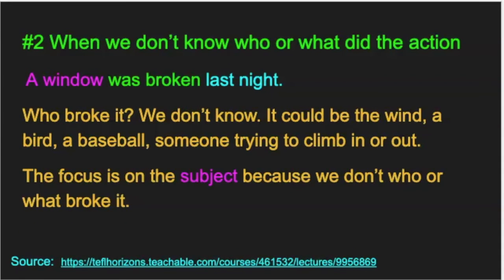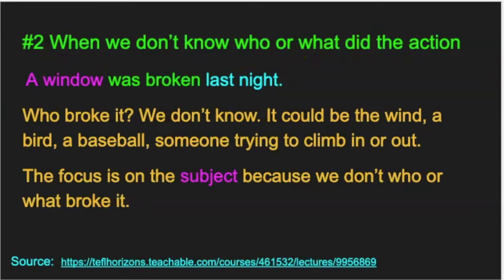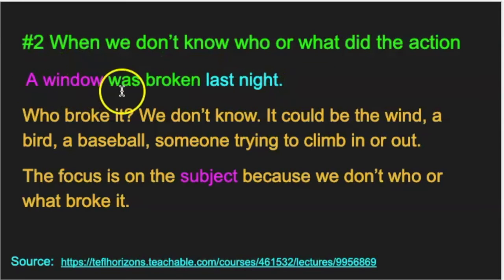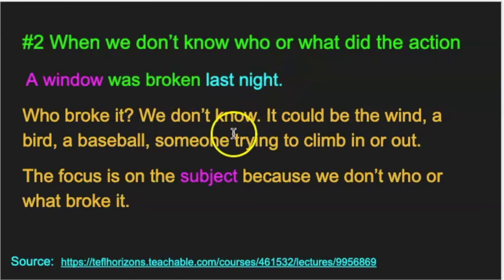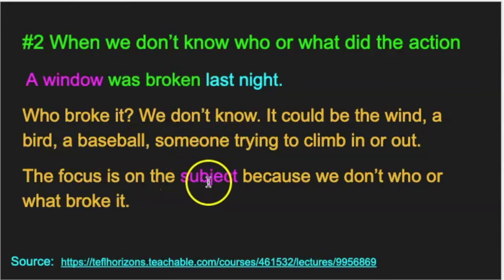Another use for the passive voice is when we don't know who or what did the action. 'A window was broken last night.' A window is the subject, 'was broken' is the verb — 'was' is to be and 'broken' is the past participle. Who broke it? We don't know. It could be the wind, a bird, a baseball, someone trying to climb in or out. The focus is on the subject 'window' because we don't know who or what broke it.